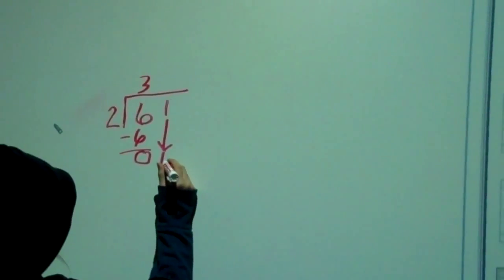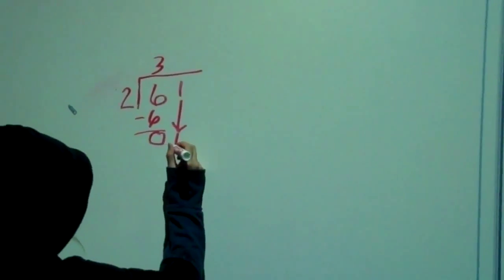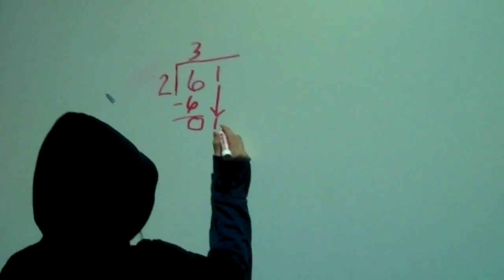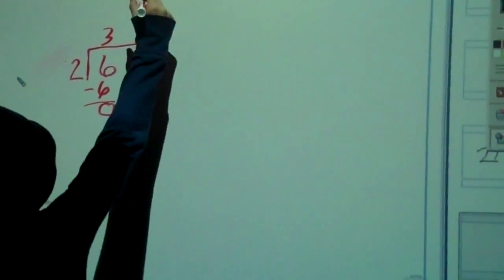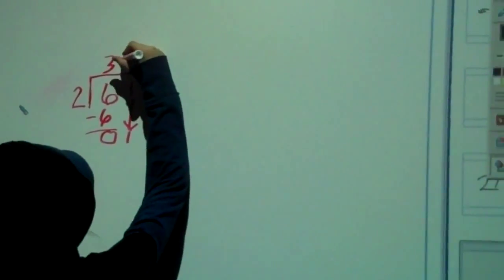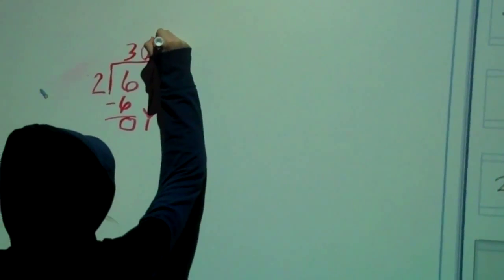And since our thing is zeros in the quotient, we have to have a zero in our answer. So 2 goes into 1, 0 times, so that would be our zero in the quotient. Quotient is just another word for answer.